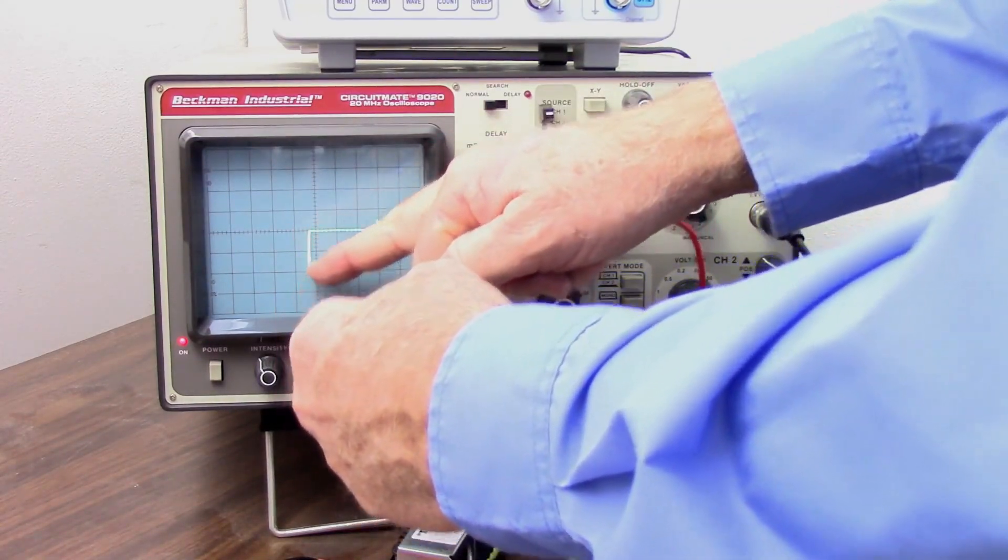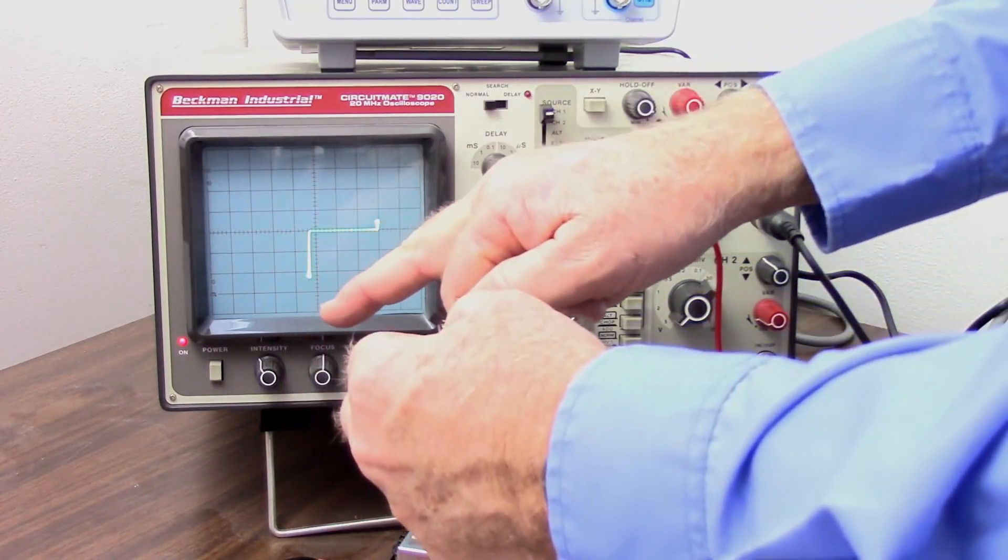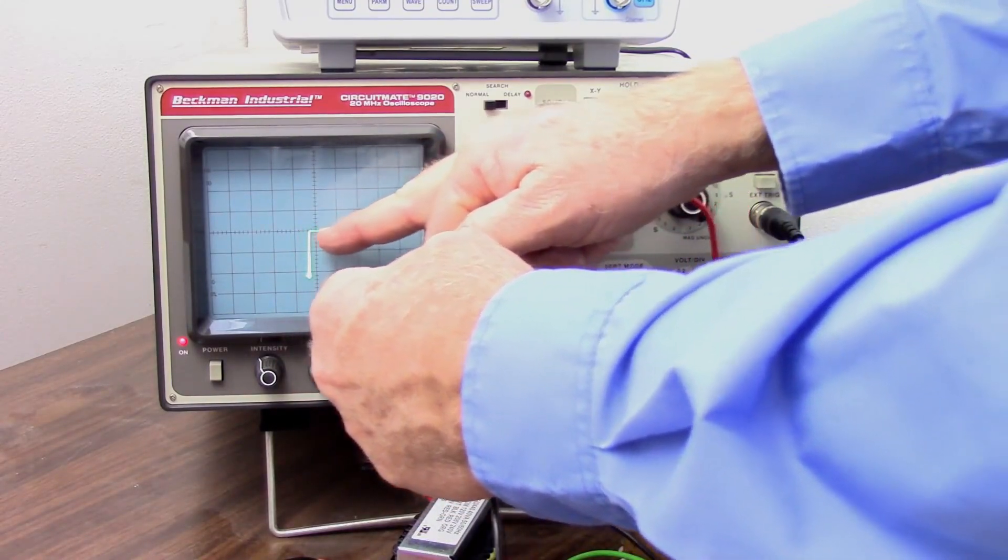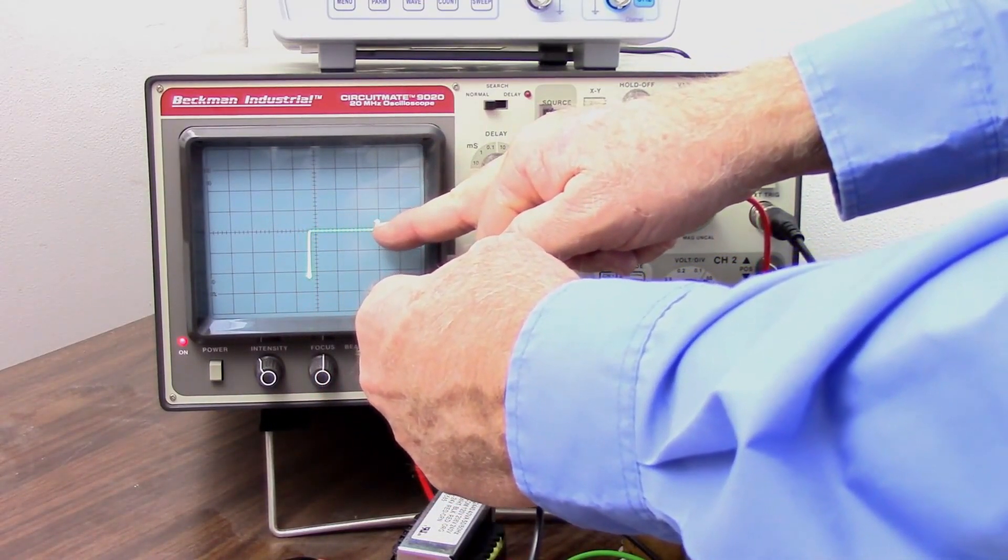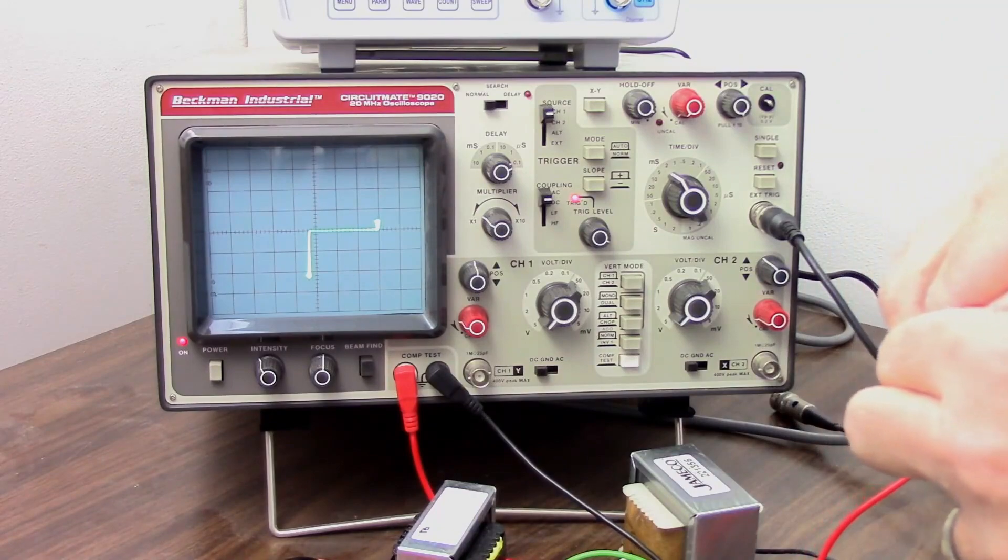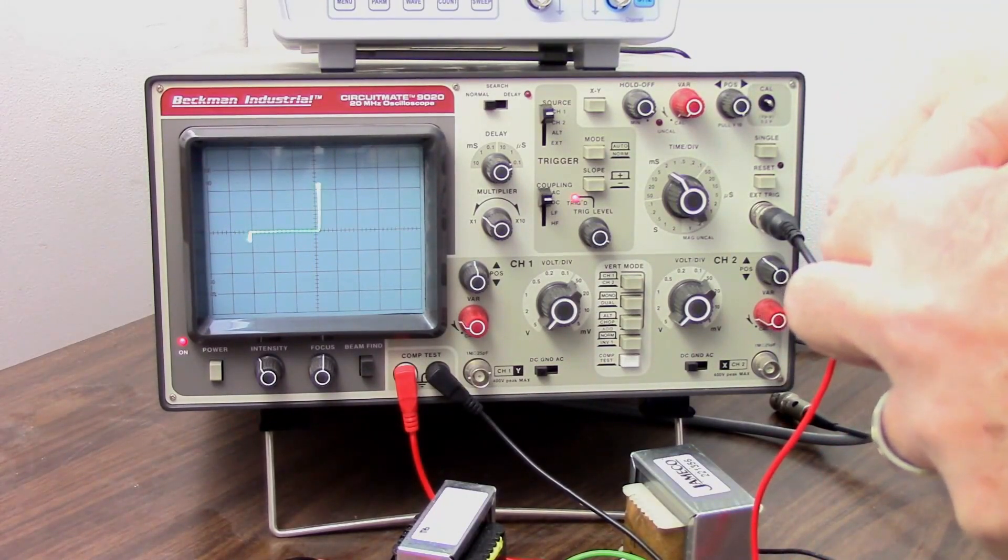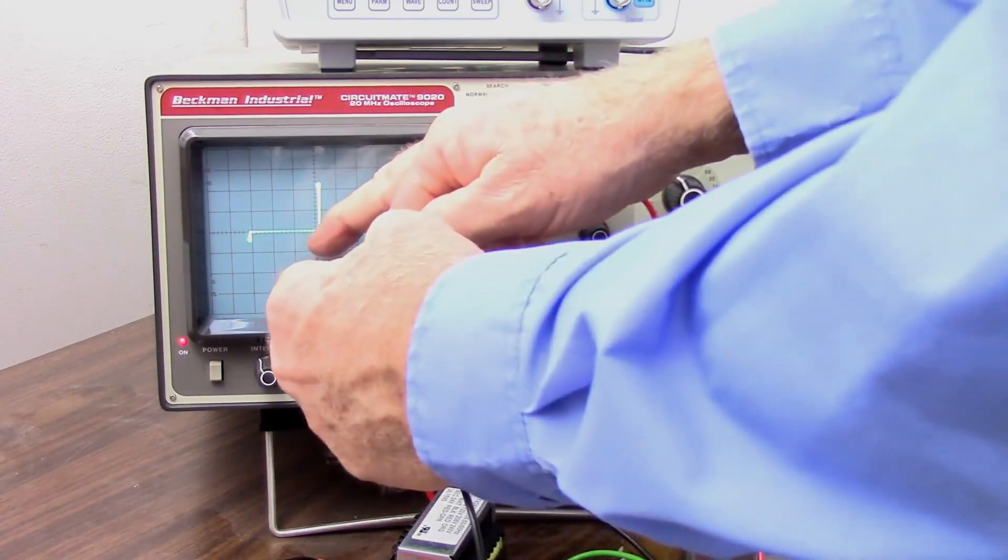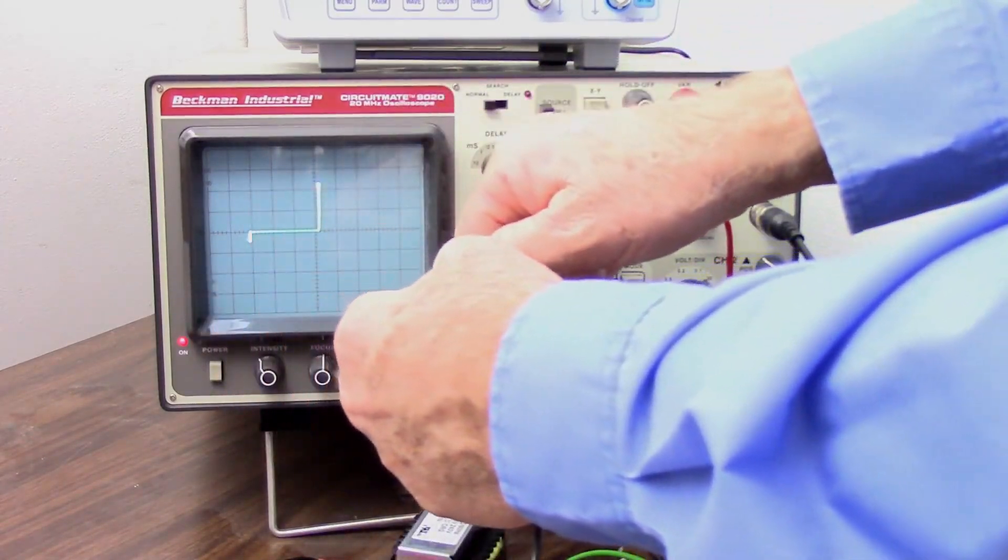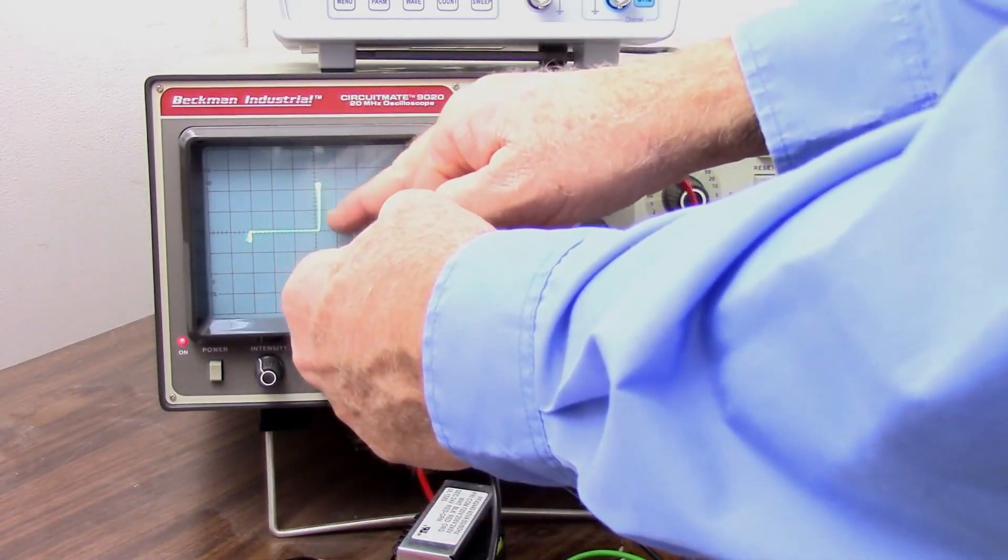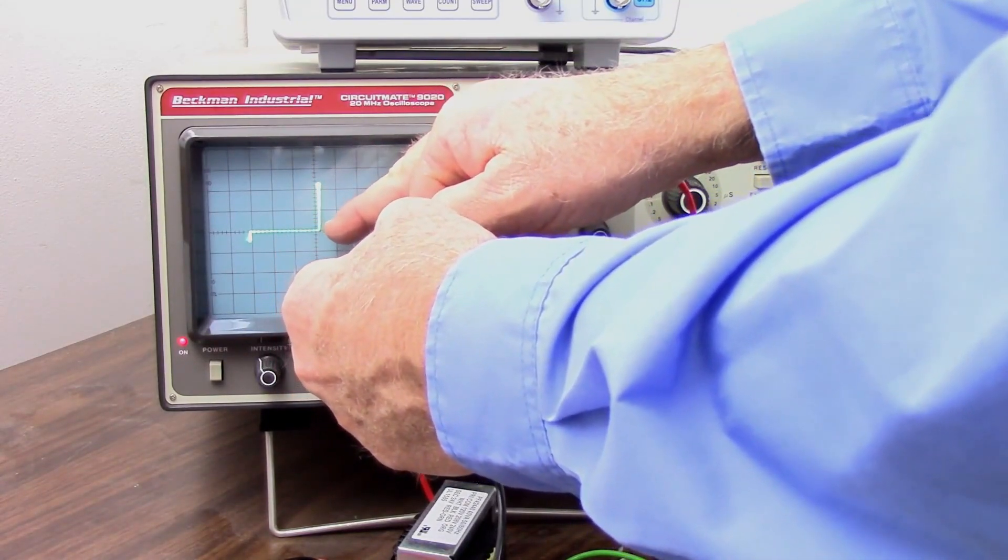So once again, there's our forward bias curve. We get a cascade of current from the base-to-emitter junction. Reverse bias. No current, no current, no current. Then we hit the breakdown voltage and we get a sudden increase in current. If I flip that around, we can see that with the same orientation of our previous diode. There we go. So there's our forward bias to the right, reverse bias to the left. We get our cascade of current from our forward bias at about 7 tenths of a volt.